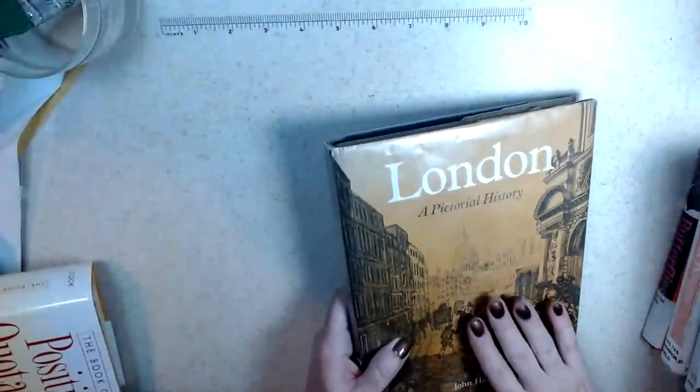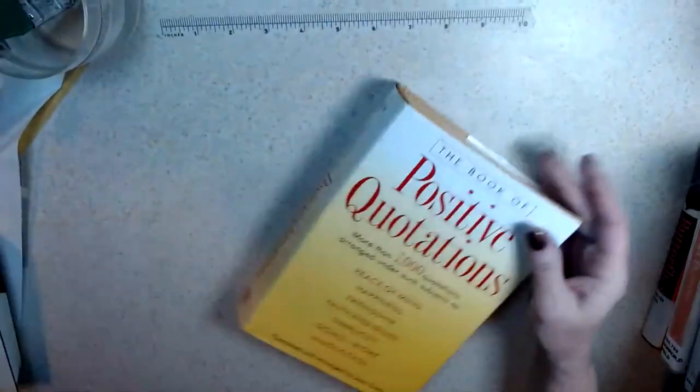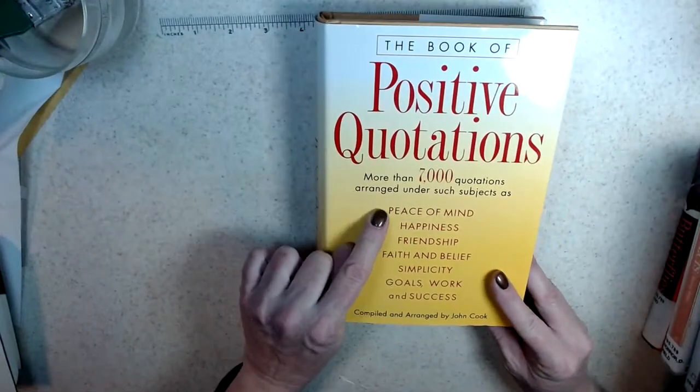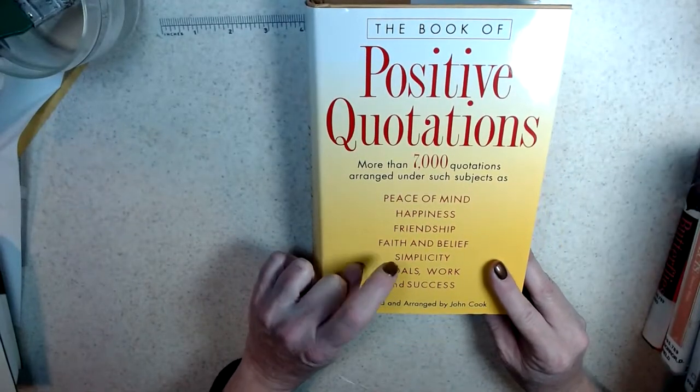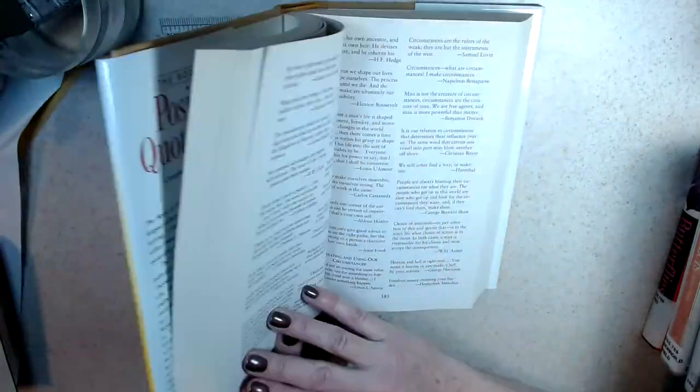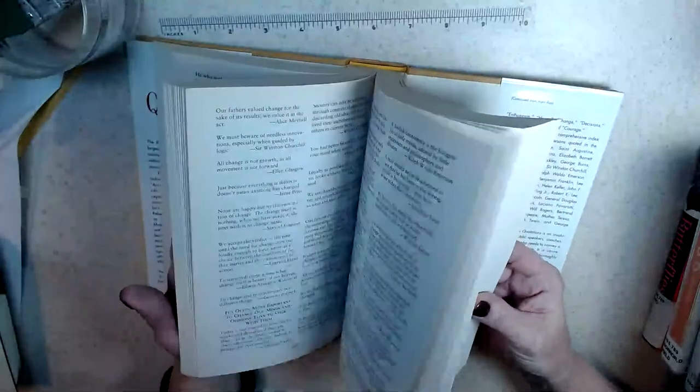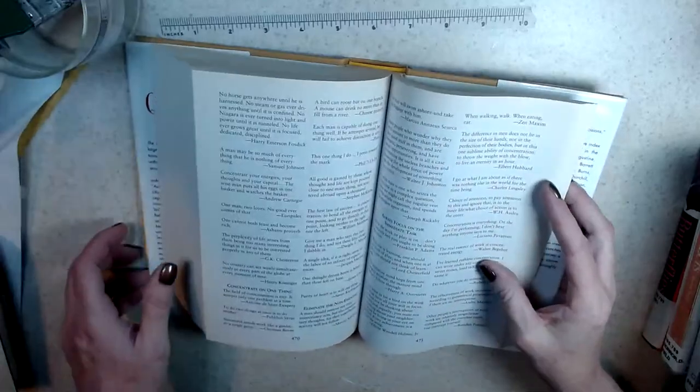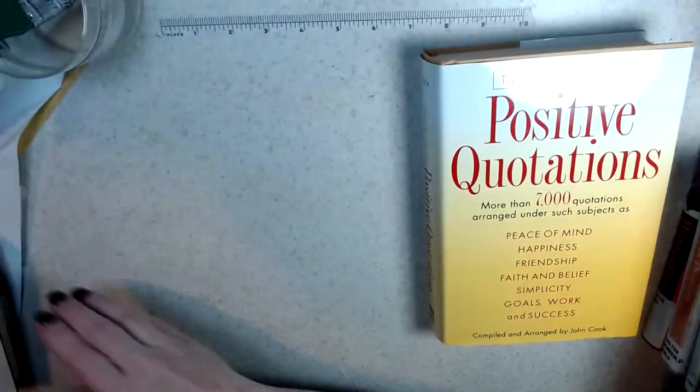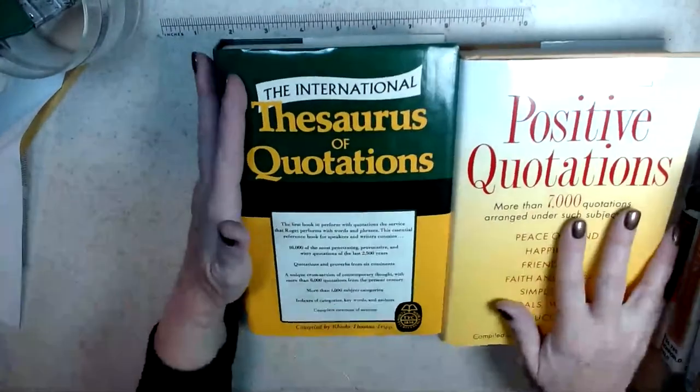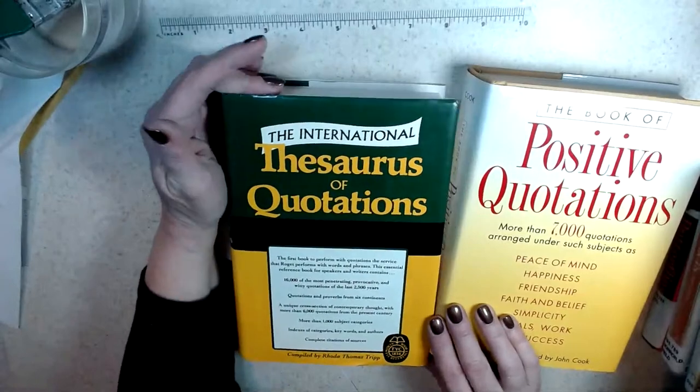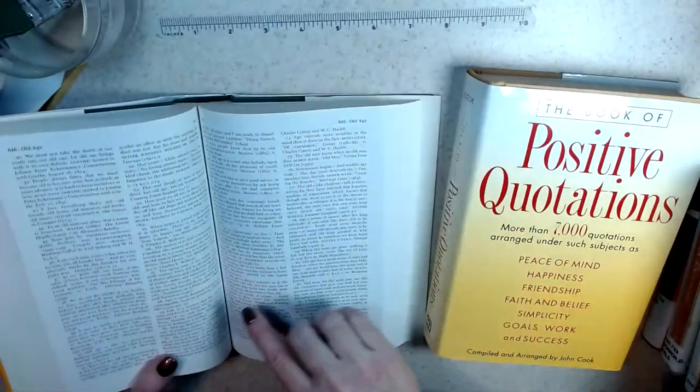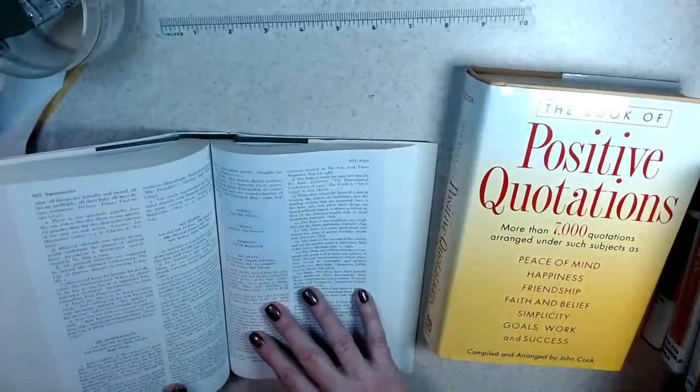I also found The Book of Positive Quotations—more than 7,000 quotations arranged by peace of mind, happiness, friendship, faith and belief, simplicity, goals, work and success. I love quotes. I have an affinity for quotes. I love reading other people's quotes. I'm obsessed. I love Bartlett's.